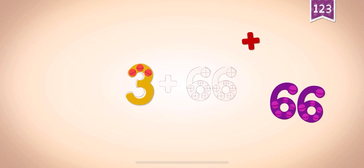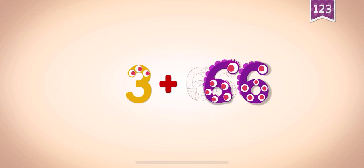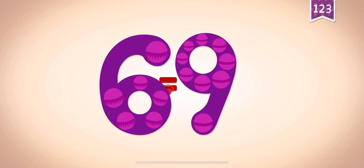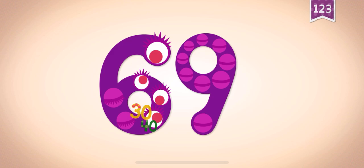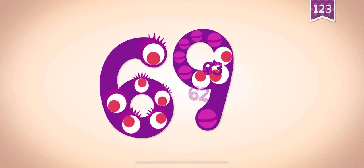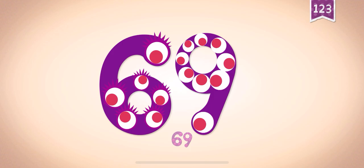Three plus sixty-six equals sixty-nine. Thirty, forty, sixty, sixty-two, sixty-four, sixty-five, sixty-six, sixty-nine.